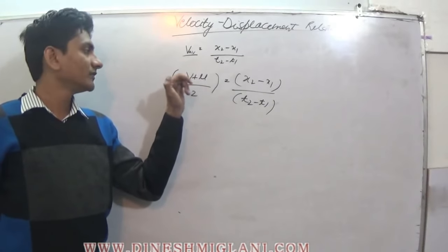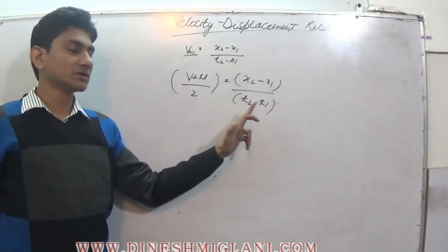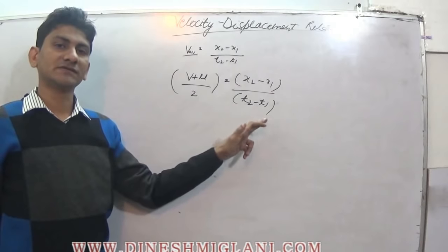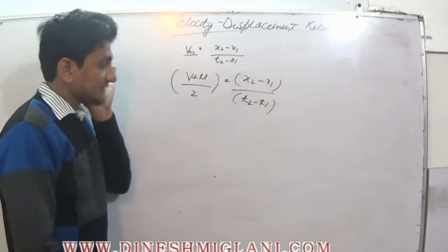This you already know: v is the final velocity, u is the initial velocity. So if t1 is equal to 0, we can put t2 minus t1 is equal to t. Let us say t2 is equal to t, and x2 minus x1 can be written as s.